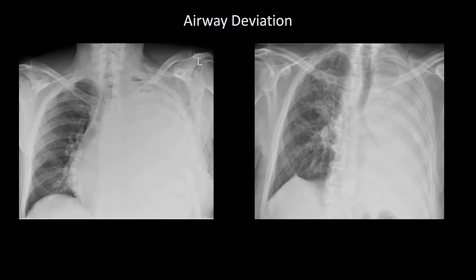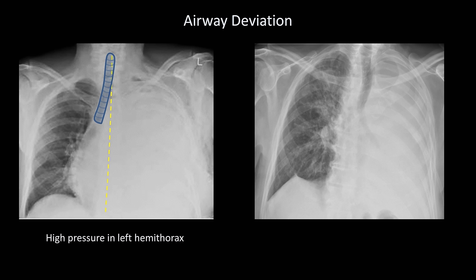Usually the underlying condition leading to airway deviation is quite obvious, and knowledge of which conditions push the trachea away versus pull the trachea towards the abnormality is not critical. However, here is an example of when it is critical. Consider two x-rays in which the left hemithorax has been totally whited out. If we draw a midline down the vertebral bodies, we can see that the trachea is deviated away from the whited out side. Therefore, the abnormality must be causing excessive intrathoracic pressure on that side, and is thus a massive left pleural effusion.